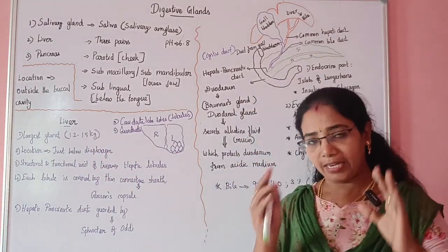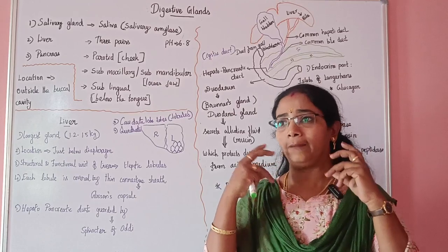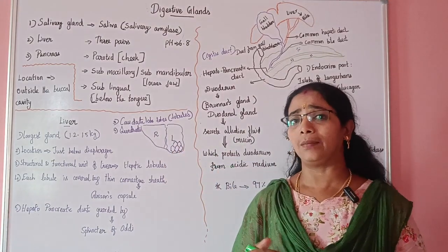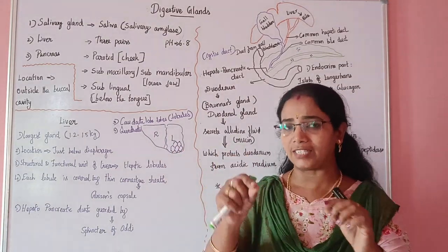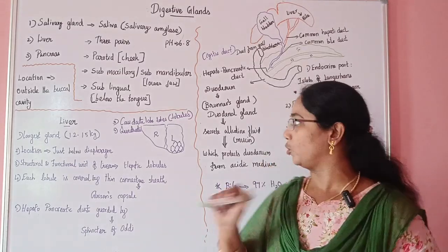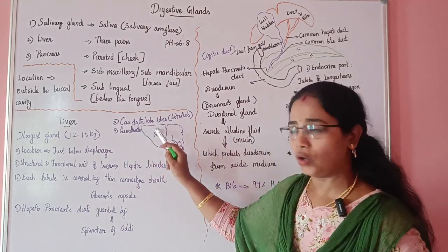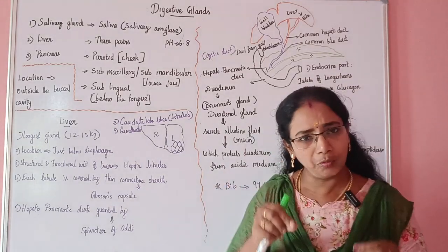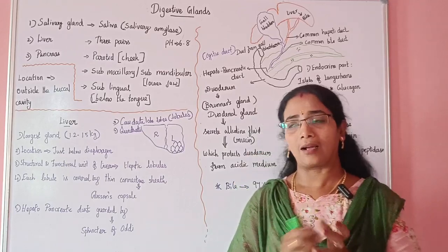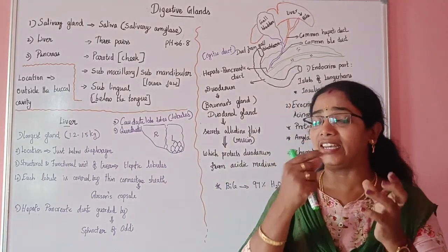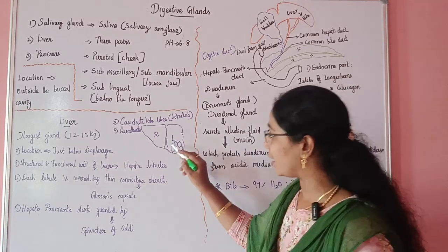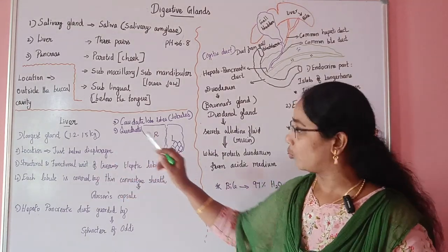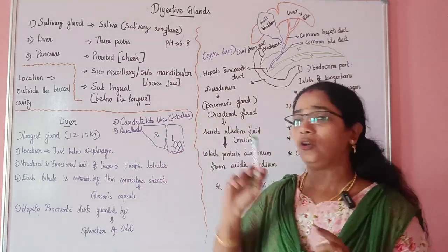The liver is divided into lobes. Generally we say two lobes, but anatomically it is divided into four lobes: right lobe, left lobe, quadrate lobe, and caudate lobe. Within each lobe, there are smaller lobules with a hexagonal structure.